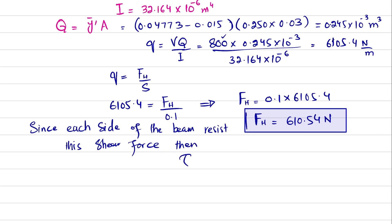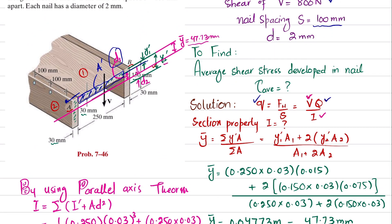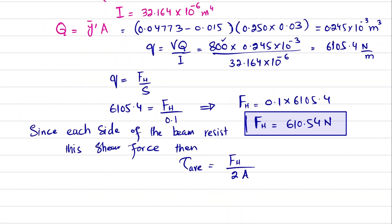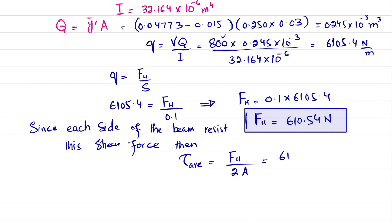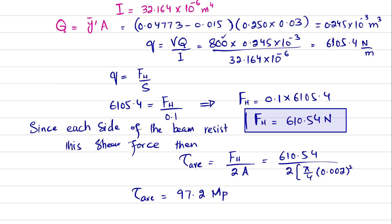The average shear stress in the nail equals Fh divided by 2 times the nail area. There are nails on both sides, so the shear force is divided by 2. With Fh equal to 610.54 newtons, divided by 2, times the nail area (pi/4 times 0.002 m squared), the average shear stress comes out to be 97.2 megapascals.